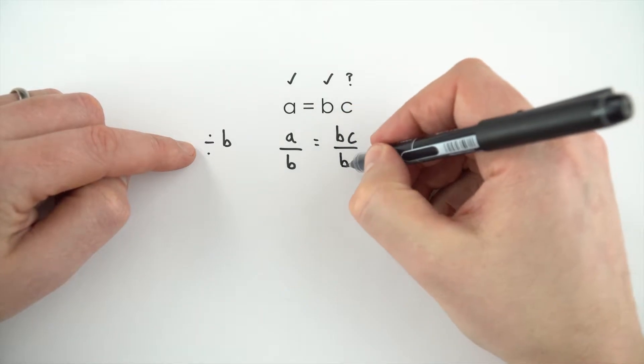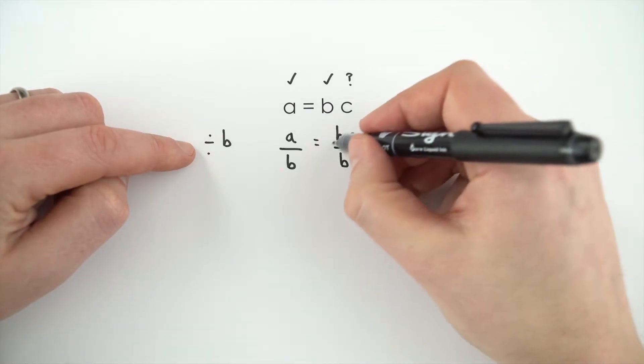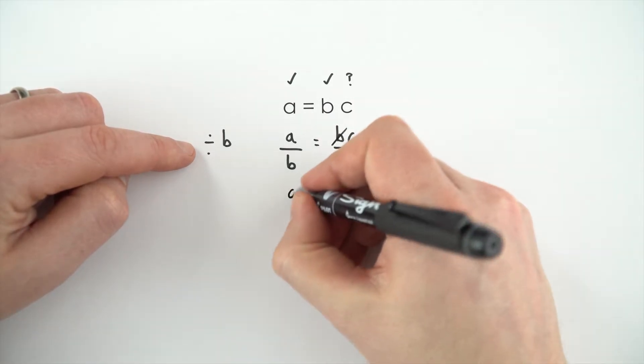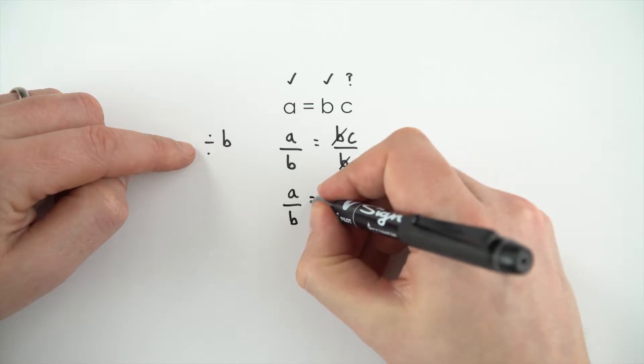But we know that b divided by b is just 1, so we can sort of cancel those out. We can then say that a divided by b is equal to c.